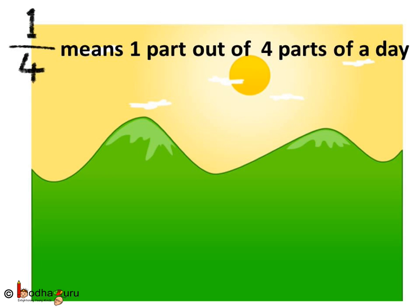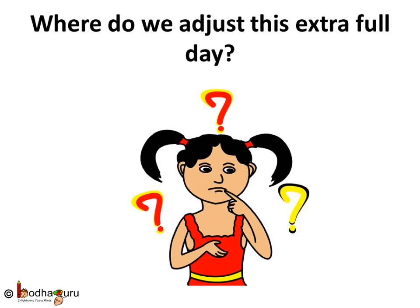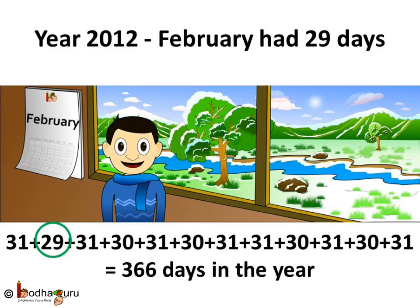One-fourth of a day means one part out of four equal parts if we divide the whole day into four equal parts. So after every four years, these one-fourth parts add up to make one full day. We adjust this extra day in the month of February. So every fourth year has 366 days instead of 365, and hence every fourth year has 29 days in the month of February instead of 28 days.